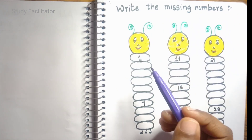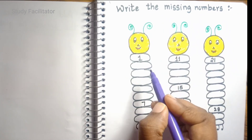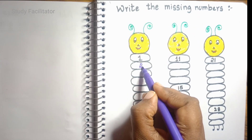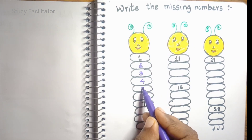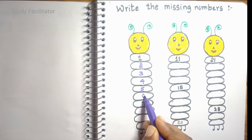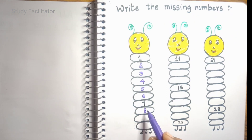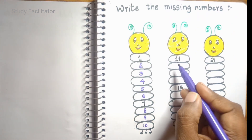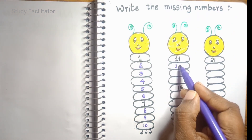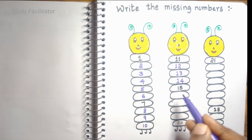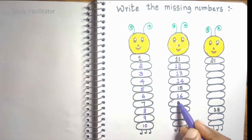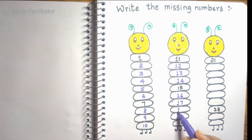Dear kids, let us learn. In this worksheet we are writing missing numbers: 1, 2, 3, then 4, 5, 6, 7 — what is next? 8, 9, 10, 11 — what is next? 12, 13, 14, 15, 16, 17, 18, 19.